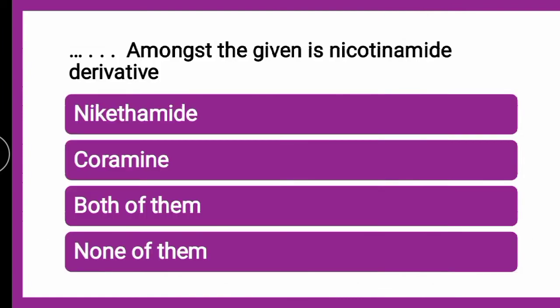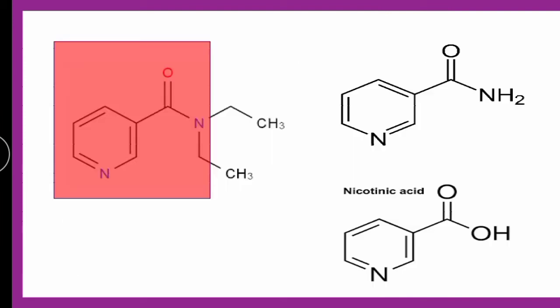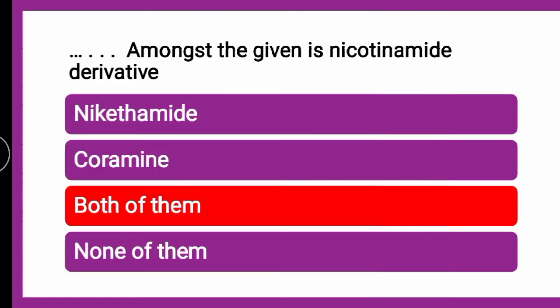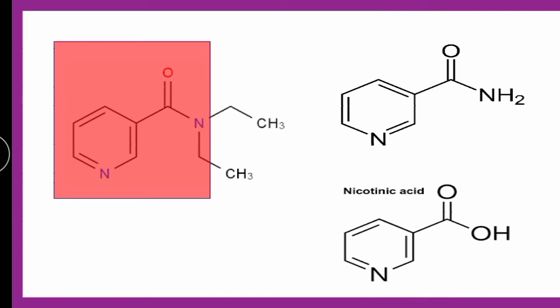The next question is: Which amongst the given is a nicotinamide derivative? Whether it is nicethamide, coramine, both of them, or none of them? The correct answer is both of them — nicethamide, also known as coramine, both names are the same — is a nicotinamide derivative. If you look into the structure, nicotinic acid when converted to its amide (C-O-N-H) becomes nicotinamide, and this nicotinamide moiety is present in nicethamide's structure.